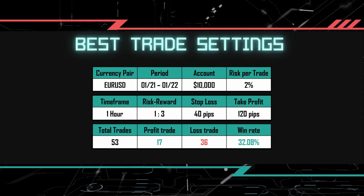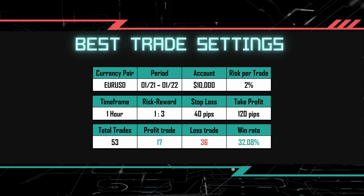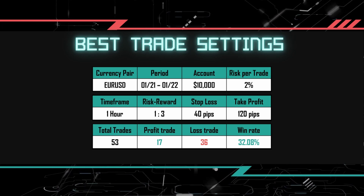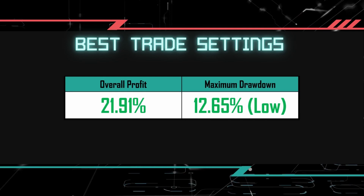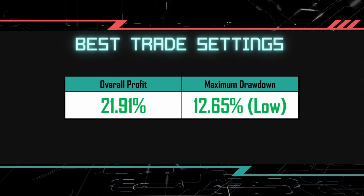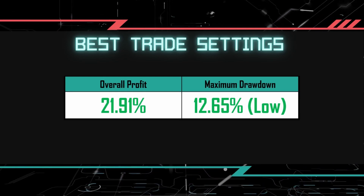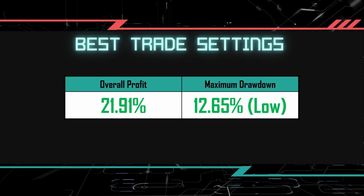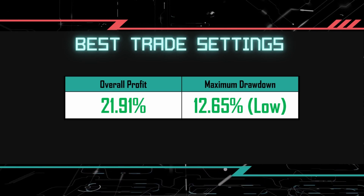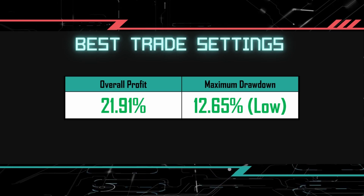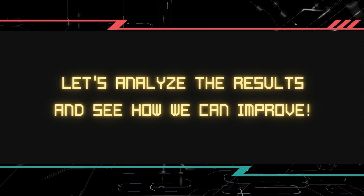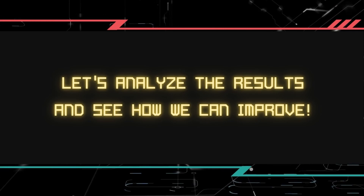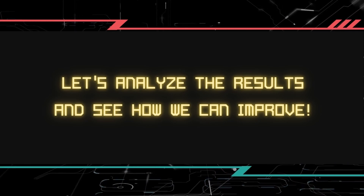We are fine with this win rate as the risk to reward ratio is at 1-to-3. By risking 2% of the account for each trade, overall there is a total of 21.9% increase in the account balance by using this strategy, and the overall equity drawdown encountered was 12.65%. This result is still considered good, but we think that it can be improved. Let's proceed to the next section to analyze the results and identify some improvements.